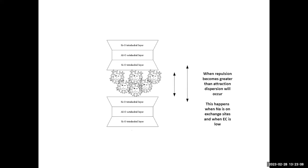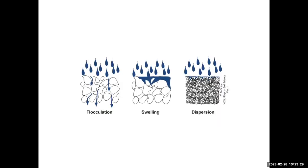As more water and sodium come in, particles get farther and farther apart — the soil becomes swollen. When they get too far apart, they disperse, and that's when you get major problems. Flocculation means water moves through well. Swelling means particles get fatter and close the pores so water doesn't move. Dispersion means you lose all soil structure. It's hard to overcome swelling, but you can come back from it; from dispersion you cannot.